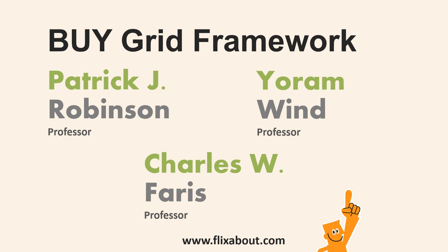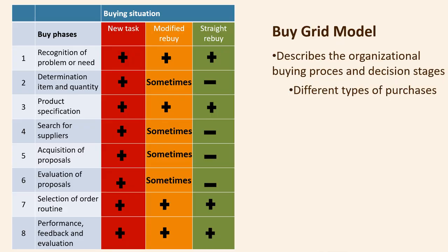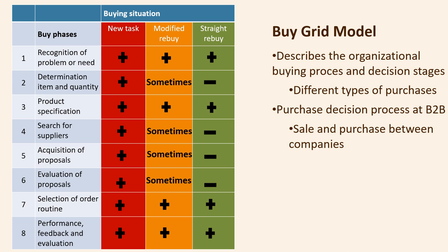The BuyGrid framework is a model developed by three professors, Patrick J. Robinson, Charles W. Farris, and Yoram Wind in 1967. The BuyGrid model is a framework that describes the organizational buying process and the decision stages involved in different types of purchases. The BuyGrid model covers the purchase decision process at B2B, also called industrial buying — the sale and purchase of goods and services between companies.